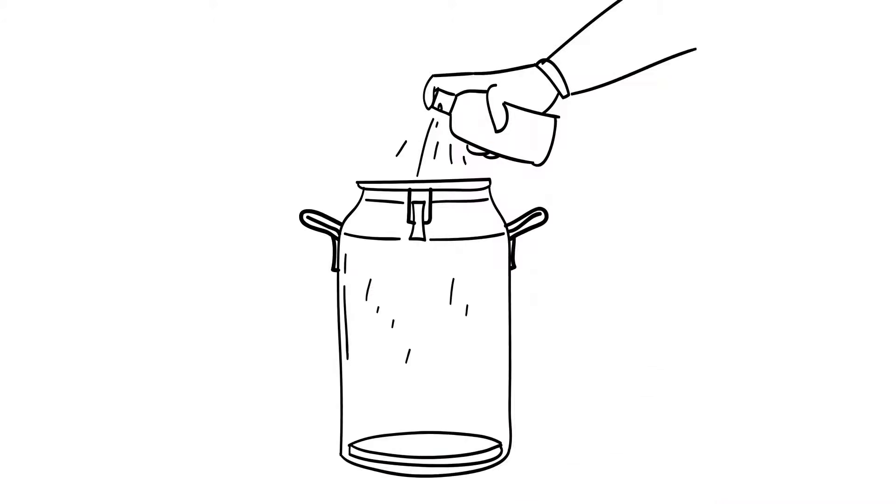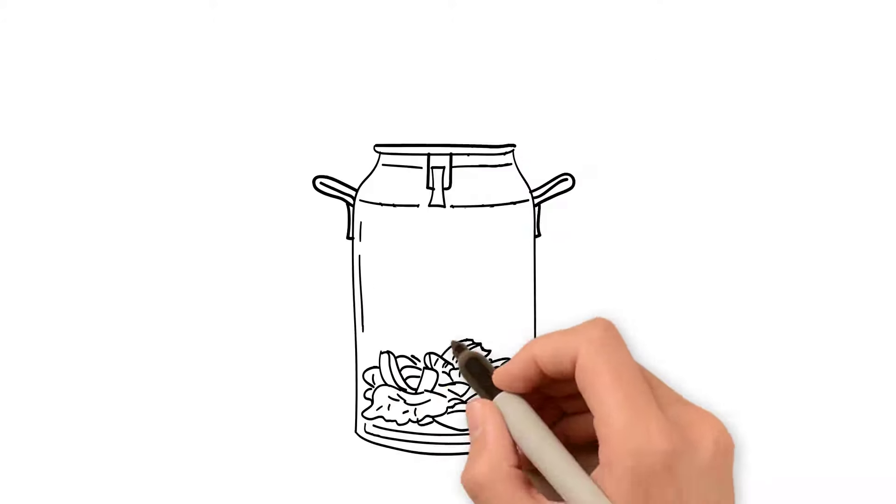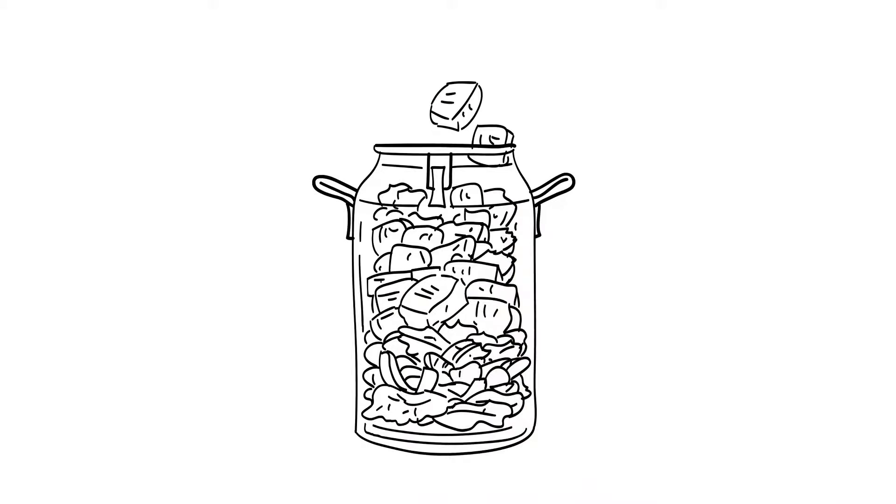Spray the can with any non-stick cooking spray. Place your ingredients, vegetables in first and meat in last, layering them on top of one another in the can cooker.